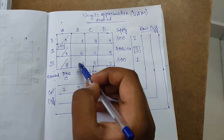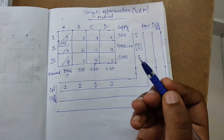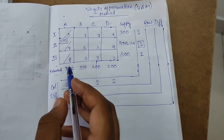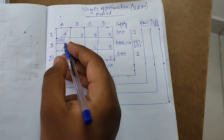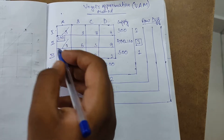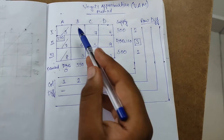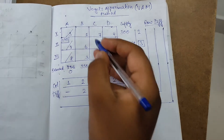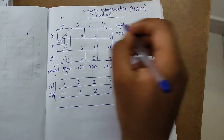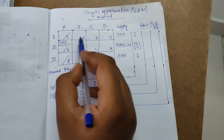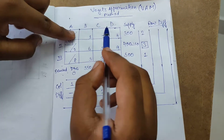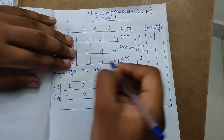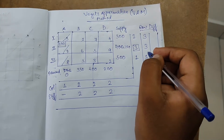Now in the second iteration, recalculate the row and column differences. The cancelled column gets a dash. In the remaining column, the least two elements are three and one, so the difference is two. The other columns remain the same. In the row where three is struck off, look at the remaining elements: one and four, giving a difference of three.